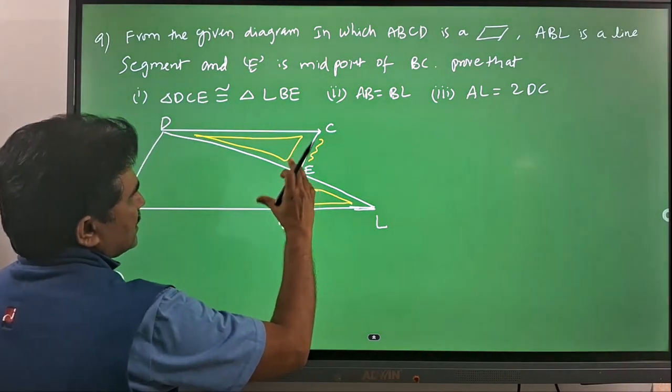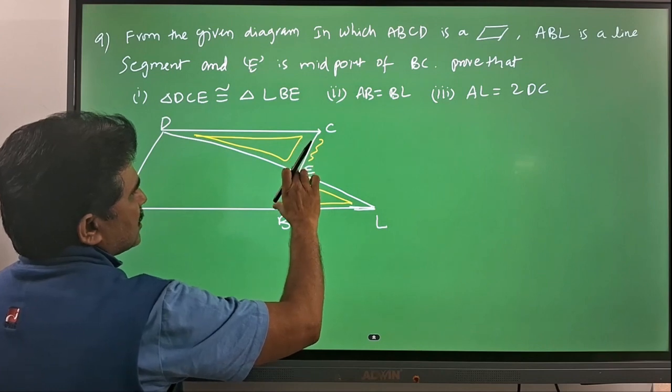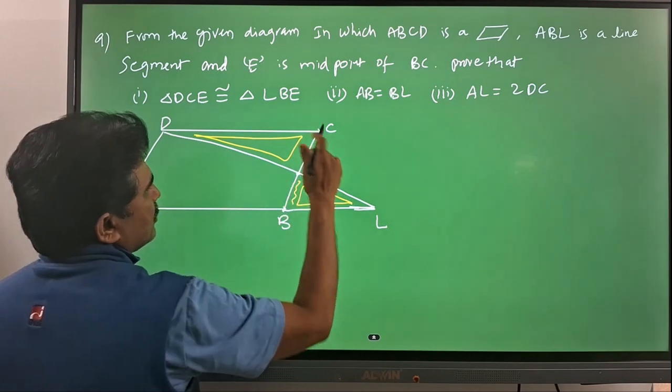First of all, I am considering the given information which is E is the midpoint of BC. If it is the midpoint, then BE is equal to EC.